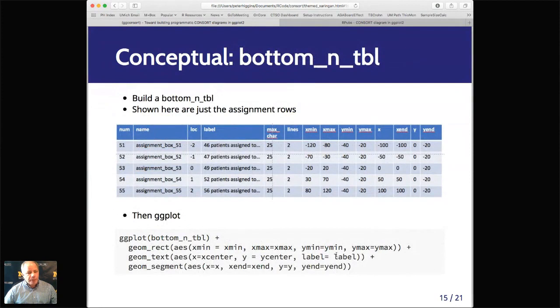The bottom table is a little bit more complicated, but it largely works the same way. I'm just showing the assignment rows from this five-arm study. So they number from 51 to 55. They're named appropriately. Their location, because this one's in the center, I'm calling this 0 for x equals 0. The one at the far left is negative 2. The one at far right is 2. Each one has a label with maximum character and lines, dimensions of the box, dimensions of the appropriate arrow, and you ggplot them systematically the same way.